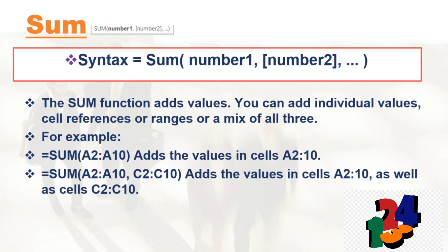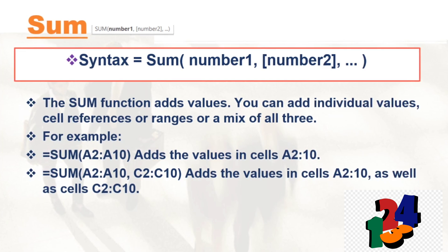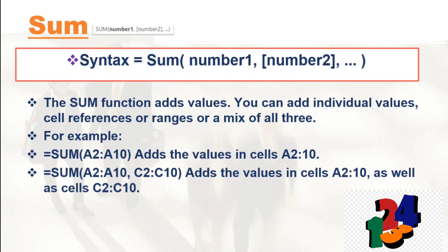SUM. The syntax for the SUM function is: equals to SUM, open parenthesis, number 1, comma, optional number 2, comma, so on, then close parenthesis. The SUM function adds values. You can add individual values, cell references or ranges, or a mix of all three.